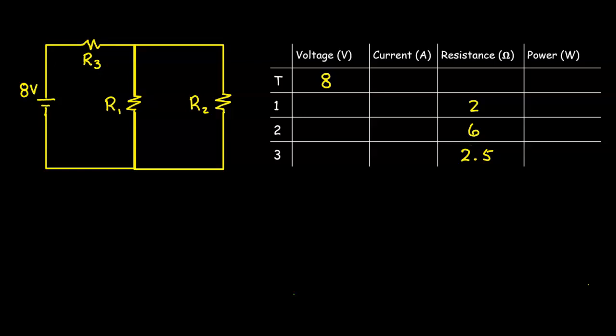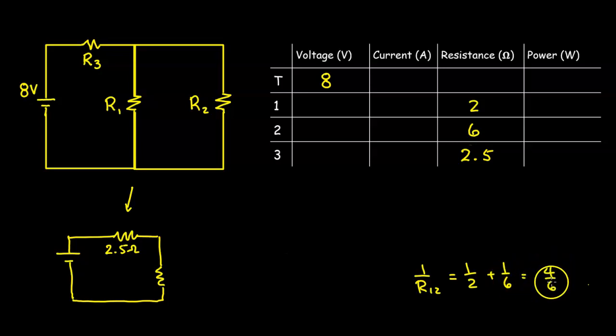In this video, we're going to analyze a combination circuit. The circuit is connected to an 8-volt battery and three resistors. The first thing we're going to do is combine the resistance of resistor 1 and 2. Since R1 and R2 are in parallel, we're going to use our resistors in parallel equation, which is 1 over R12 (because I'm combining 1 and 2, I'm going to label it R12) equals 1 over 2 plus 1 over 6, which gives me 4 over 6.